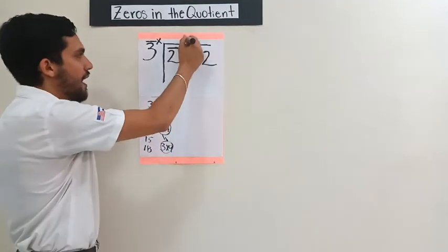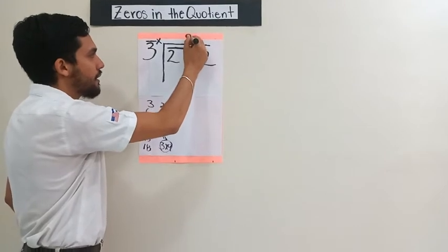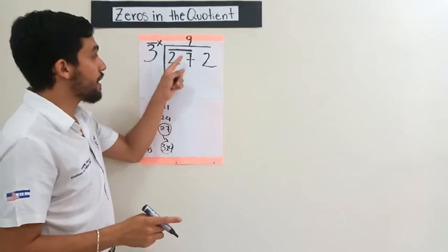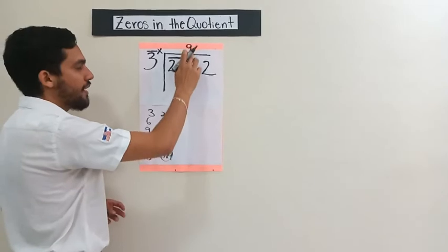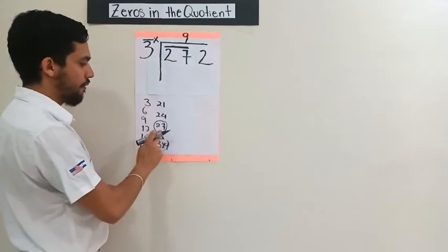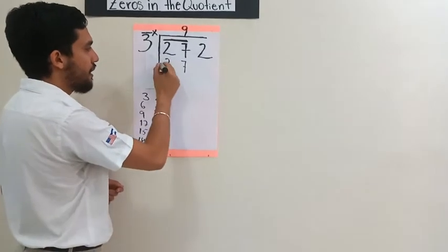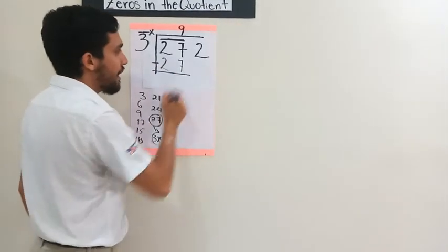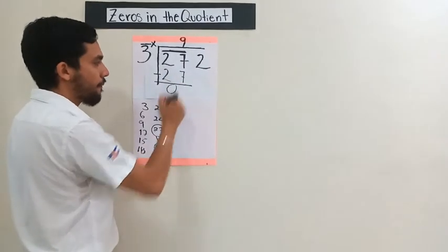So we're going to take 9 and write it here, above the 7. Remember, when you take 2 digits, you must write the number above the last digit you took. We already know that 9 is the number we needed here. So we say 9 times 3 equals 27. We write 27 over here. Don't forget to write the subtraction sign, and then take away 27 minus 27, which equals 0.